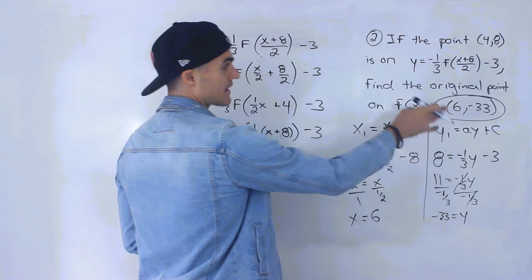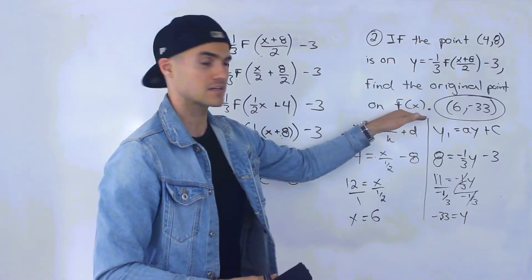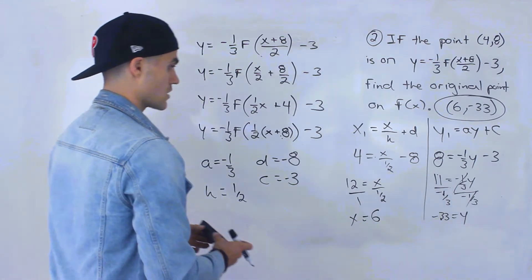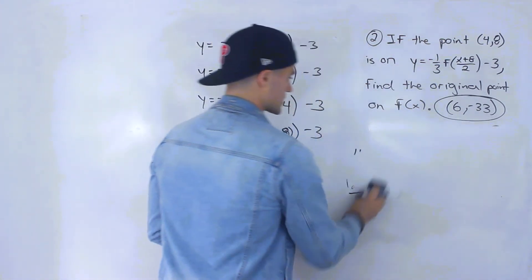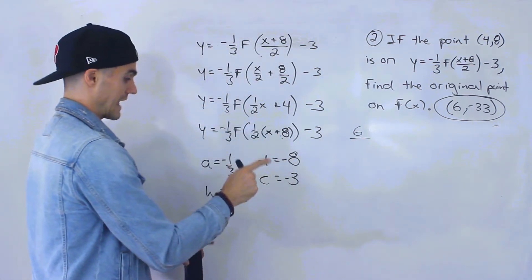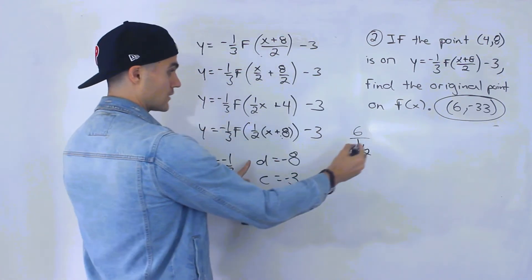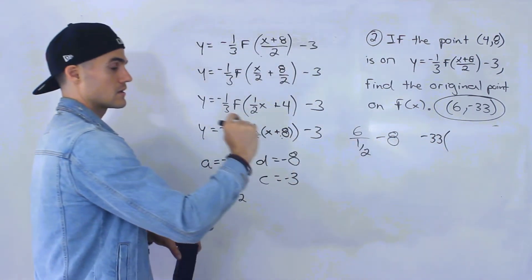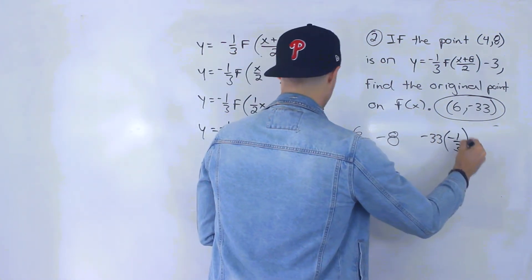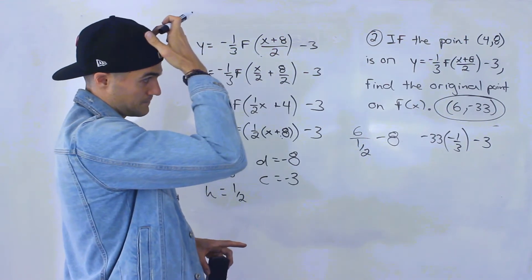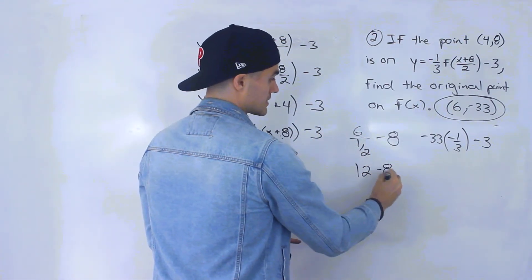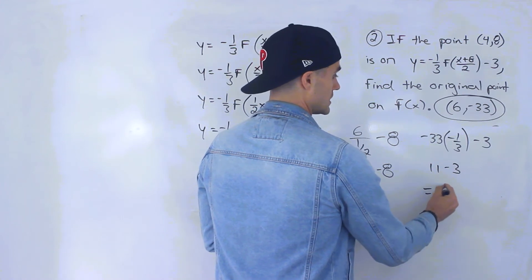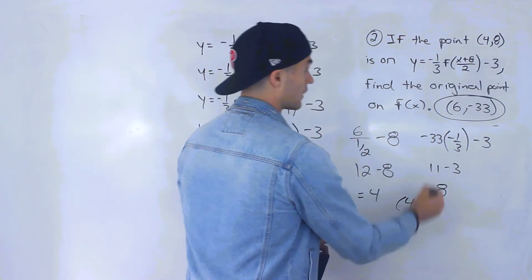As a final check, we can take (6, −33) and run it through the transformation values to verify we get (4, 8). Dividing 6 by one-half gives 12, then adding negative 8 gives 4. Multiplying negative 33 by negative one-third gives 11, then subtracting 3 gives 8. So we confirm the transformed point is indeed (4, 8).